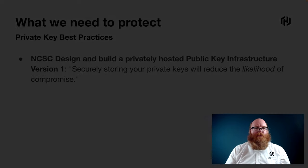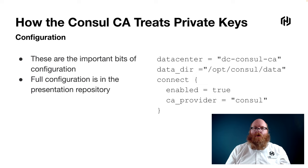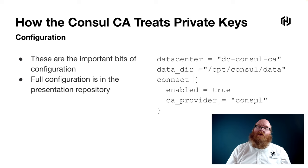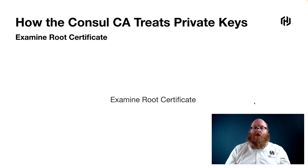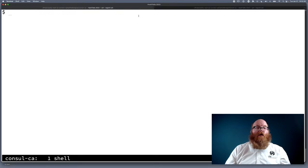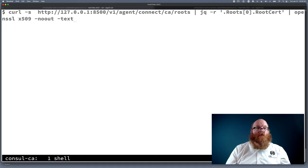Let's look at how Consul, with the built-in Consul CA, treats its private keys. We're going to go to a demo here shortly. The important bits of configuration are: a directory where we're telling Consul to store its data, we have turned on Consul Connect, and we have told Consul to use the built-in Consul CA provider. Let's switch to our demo environment and examine the root certificate. I have set up a demo environment where Consul is configured as its CA, and I'll ask it for the root CA certificate — which, again, is completely public — and I'll get that certificate back.